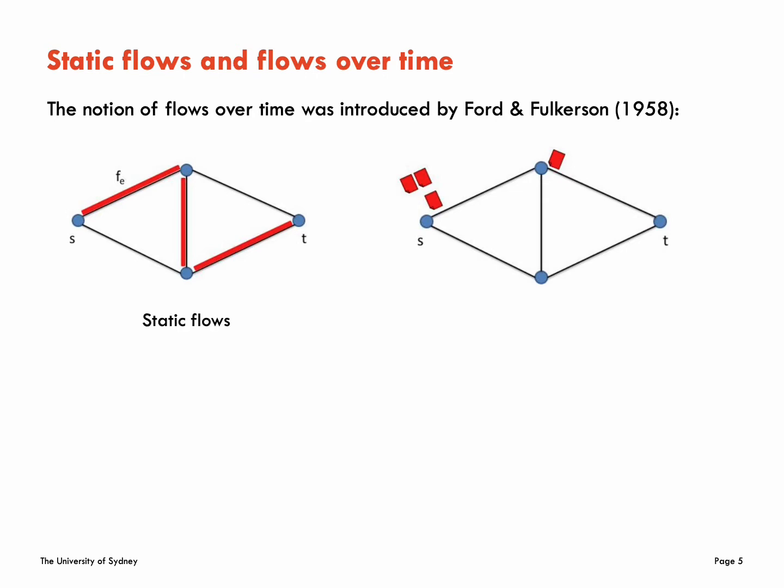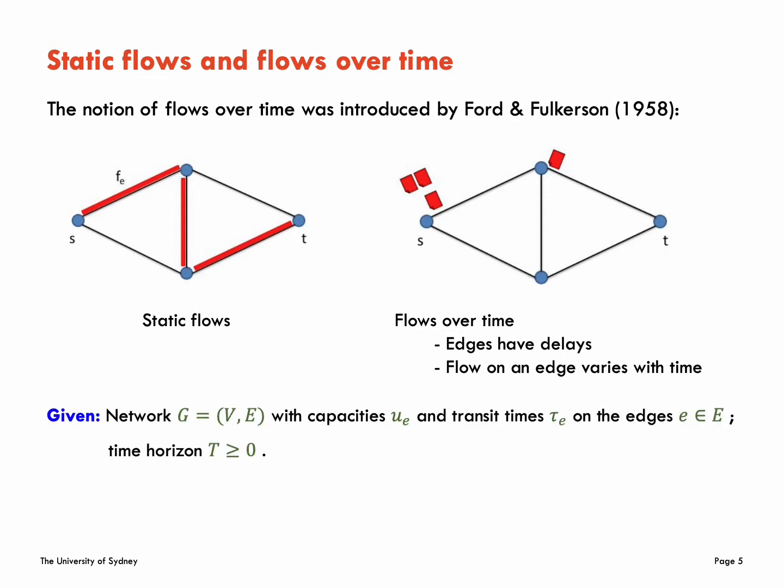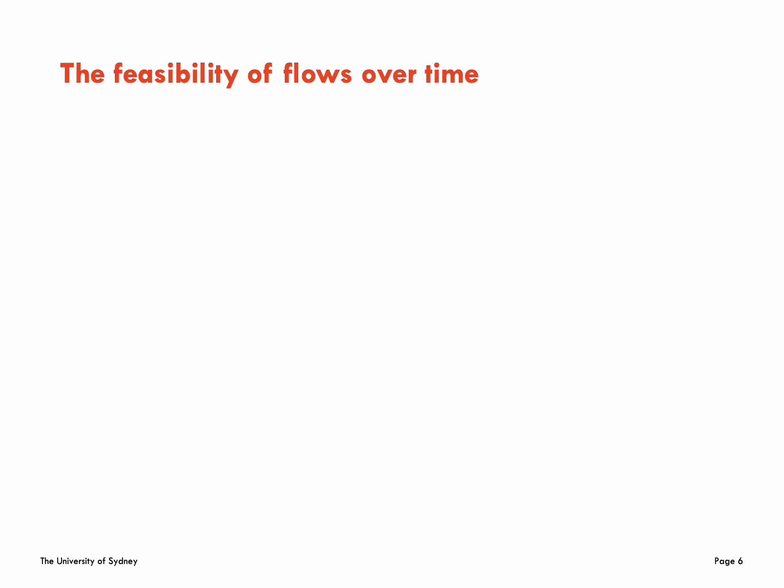Compared to static network, edges in dynamic network have transit times and flow on edge varies with time. Given a network G with capacity u_e and transit times tau_e on the edges E and time horizon T, in the setting of flows over time, a feasible flow over time should fulfill two constraints.